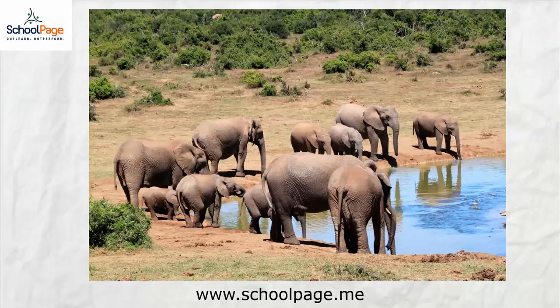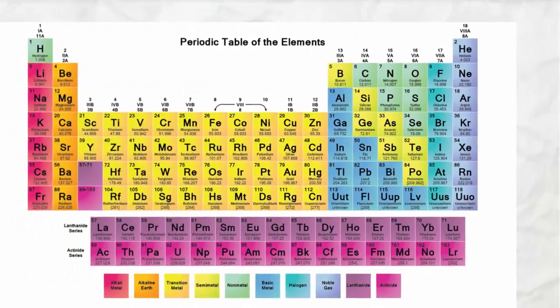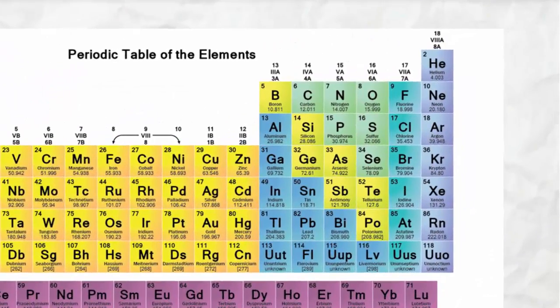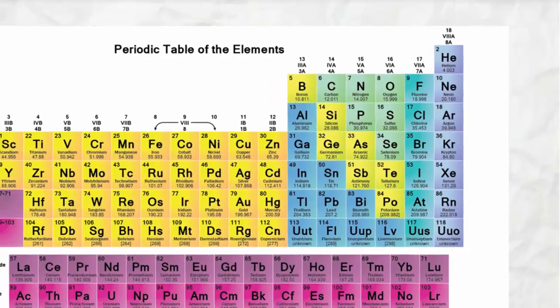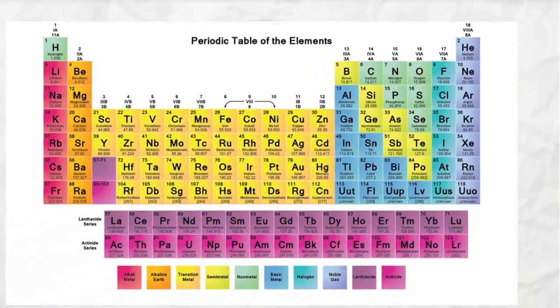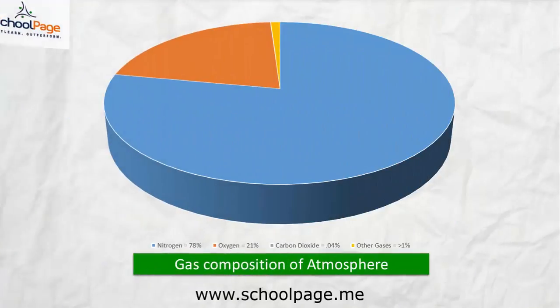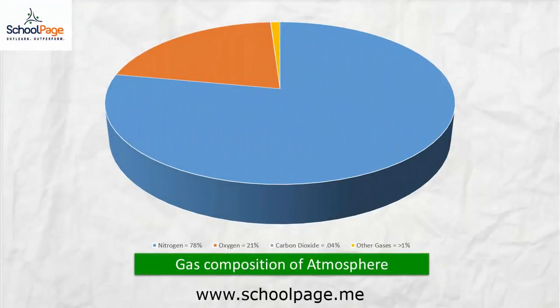Carbon is an element which occupies the sixth place in the periodic table, with atomic number 6 and mass number 12. It is one among the few non-metals present in nature. Now let us see the percentage composition of carbon in the earth's crust and in the atmosphere.